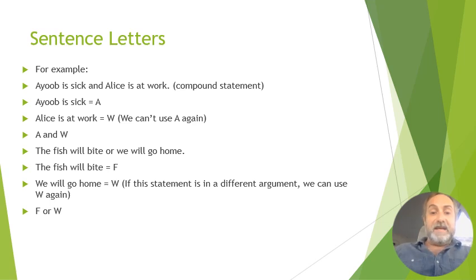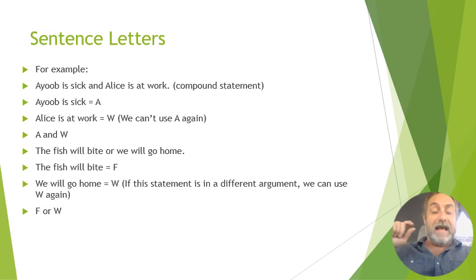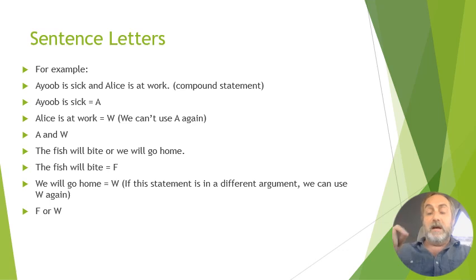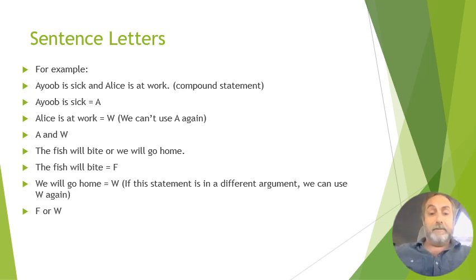Let's translate: 'Iube is sick and Alice is at work.' Take 'Iube is sick' as A, and 'Alice is at work' as W — that gives us A and W. For 'the fish will bite or we will go home,' take 'the fish will bite' as F and 'we will go home' as W, giving us F or W. Note that W can be reused in a different argument — you just need to keep letters distinct within the same argument.